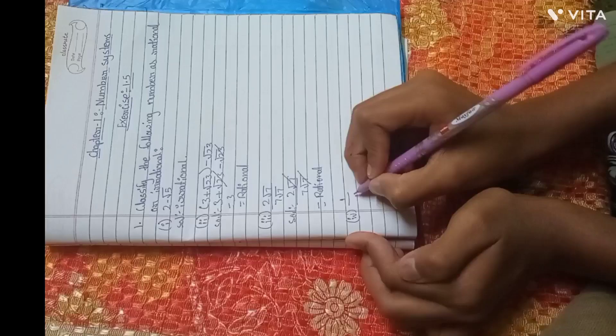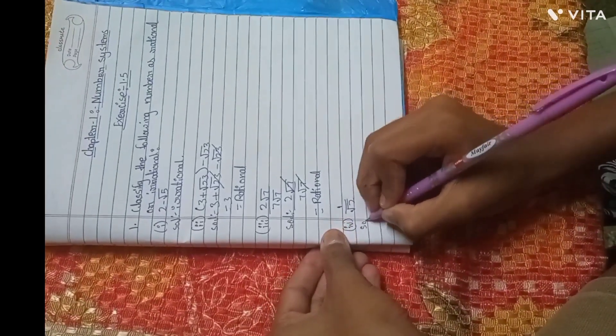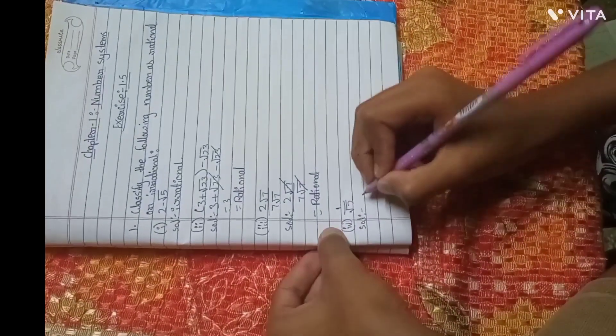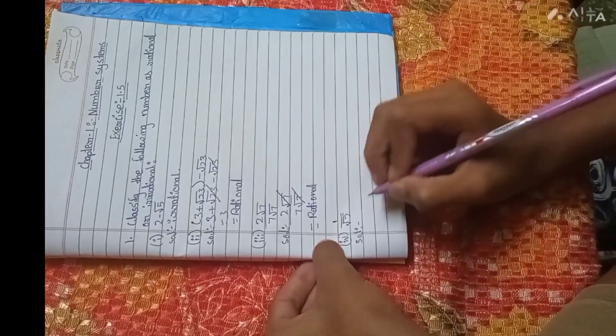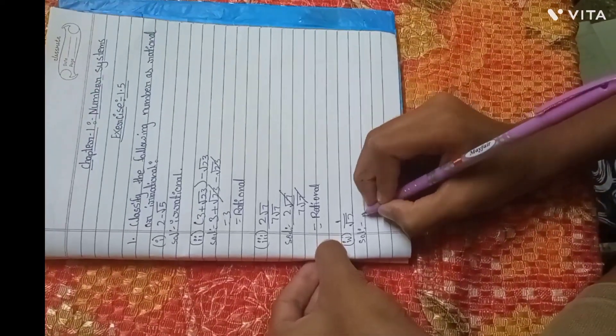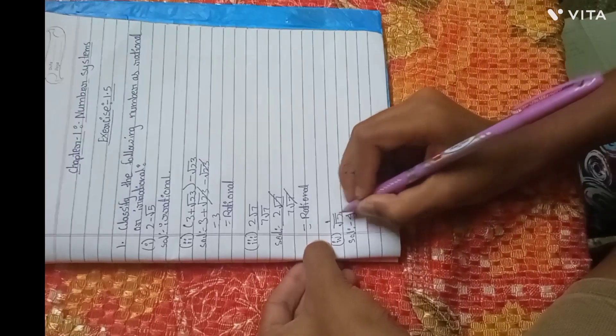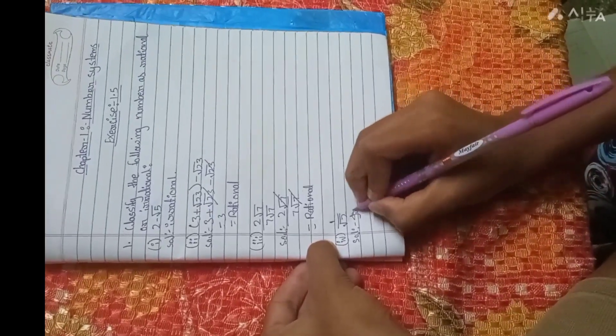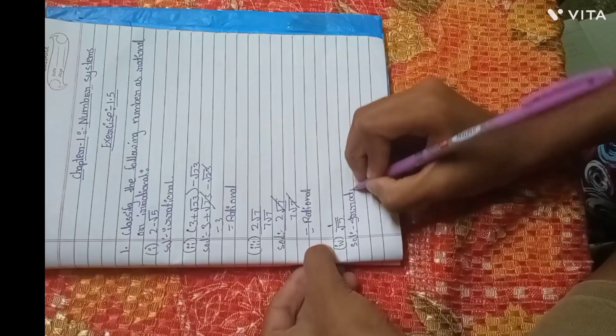Then we will write 1 by root 2. Solution: We can see it irrational. The root is a root, so we will write it irrational.